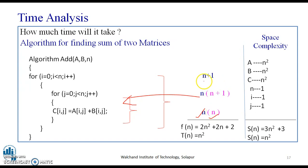On performing the multiplication, we get N square, that is 2N square plus 2N plus 2. That is, T of N is equal to N square, that is quadratic.